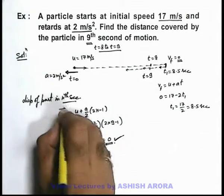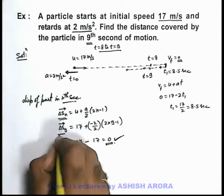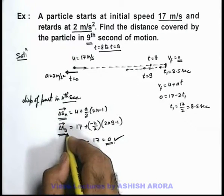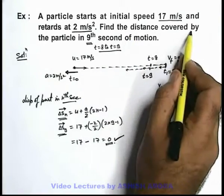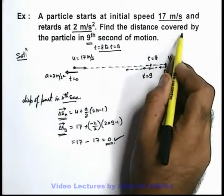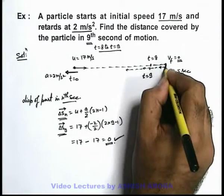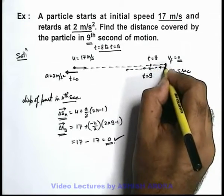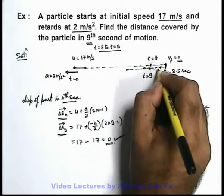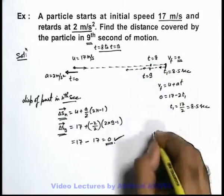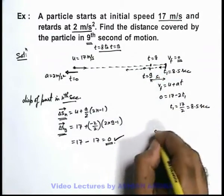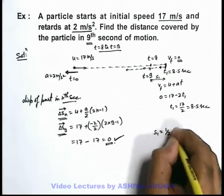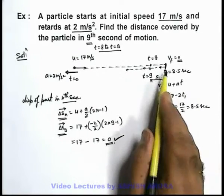This formula gives displacement in the ninth second, not distance. Since the question asks to find distance covered, we calculate it by finding the distance from rest within 0.5 seconds and make it twice. If this distance is s₁, it can be written as (1/2)at², which is (1/2)(2)(0.5)².